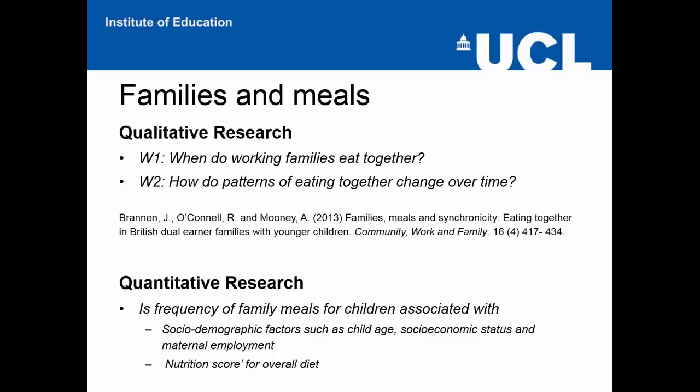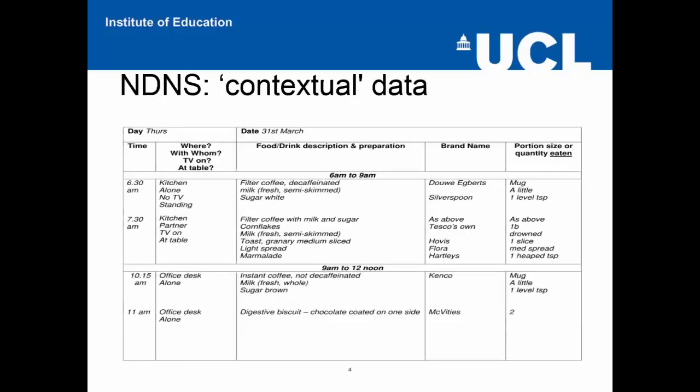We grouped families according to whether they usually, sometimes, or rarely ate together and examined the conditions under which this did or didn't happen. In the quantitative research, we used the survey para data or contextual data that had become newly available in the archive. This data — shown here in a food diary example — related to information about whom eats with the child, where the child eats (at a table, with a TV on), and what the child eats. Originally these were intended as prompts for the diary to improve accuracy in recording foods consumed, but somebody had the very good idea that these were also useful data in their own right.